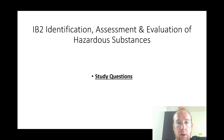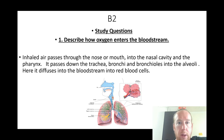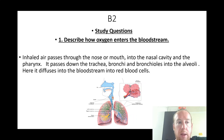Unit 2: identification, assessment, and evaluation of hazardous substances. Describe how oxygen enters the blood: inhaled air passes through the nose or mouth into the nasal cavity and pharynx, down the trachea, bronchi, and bronchioles into the alveoli, where it diffuses into the bloodstream into the red blood cells.